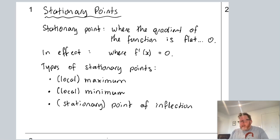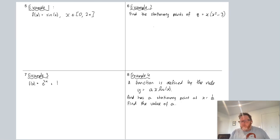Let's get stuck into some examples. Example one: we've got f(x) equal to sin(x) over the domain x from zero to 2π, and we're going to find the stationary points of that particular domain. Step one, of course, as usual, find the derivative.